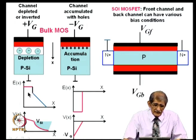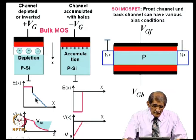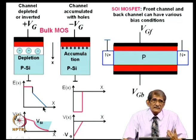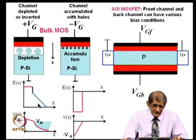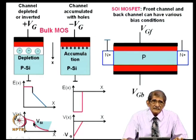The slope of the electric field depends upon the doping — higher the doping, steeper the slope. If you integrate the electric field, you get the voltage: if the field is linear, the voltage will be parabolic; if the field is constant, when you integrate, it becomes a straight line.